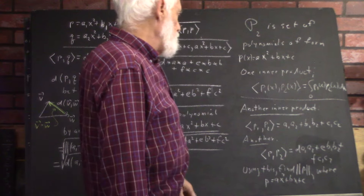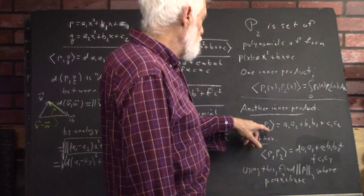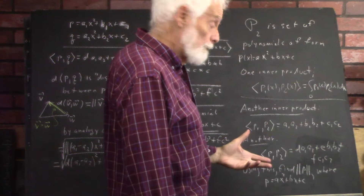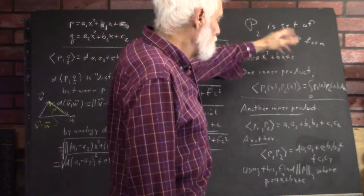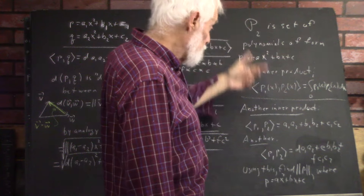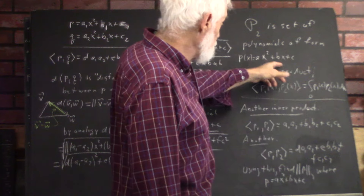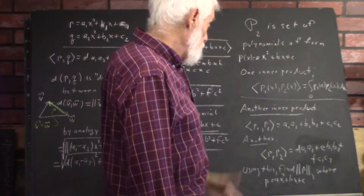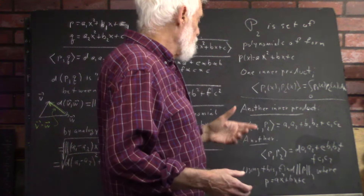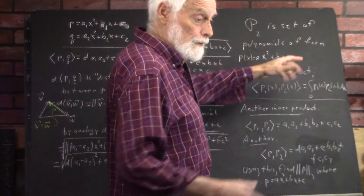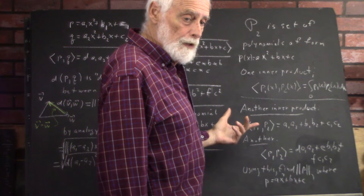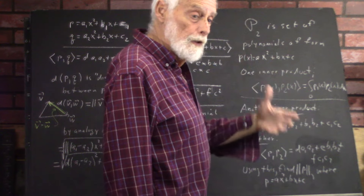Another inner product would be where the inner product of P1 with P2, if P1 is a1x squared plus b1x plus c1 and P2 is a2x squared plus b2x plus c2, could be a1a2, the product of the coefficients of x squared, plus b1b2, the product of the coefficients of x, plus c1c2, the product of the constant terms. This is completely analogous to the dot product if you represent the polynomial as the ordered triple a, b, c — identical in algebraic form to the dot product of vectors in R3.